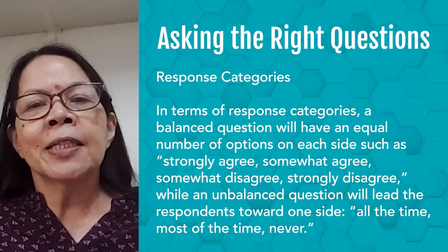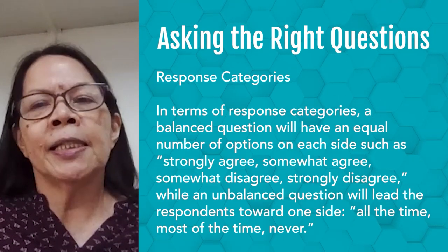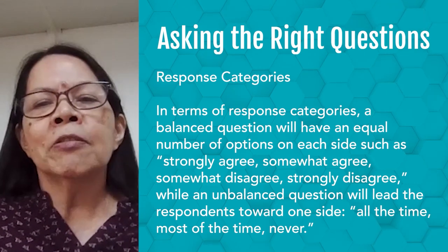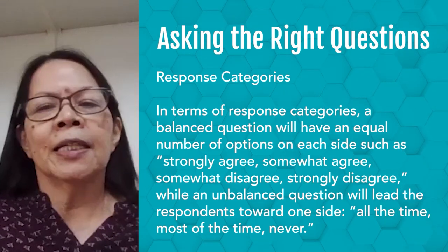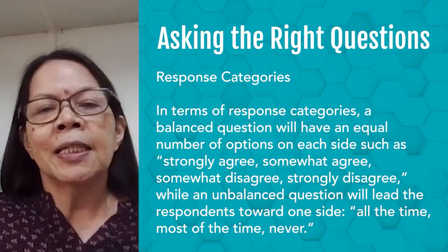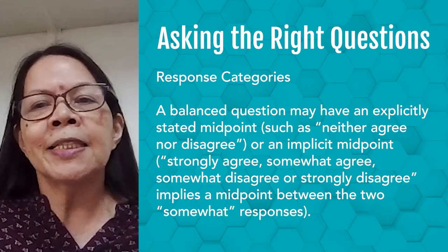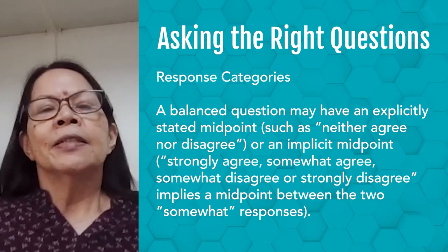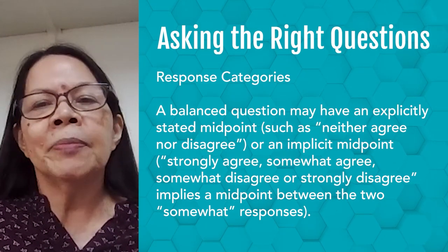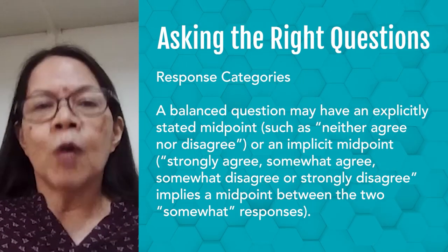As for response categories, a balanced question will have an equal number of options on each side, such as: strongly agree, somewhat agree, somewhat disagree, strongly disagree. An unbalanced question leads the respondent toward one side, like: all the time, most of the time, never — notice that 'some of the time' is missing. A balanced question may have an explicitly stated midpoint such as 'neither agree nor disagree,' or an implicit midpoint implied between the two 'somewhat' responses of strongly agree, somewhat agree, somewhat disagree, strongly disagree.